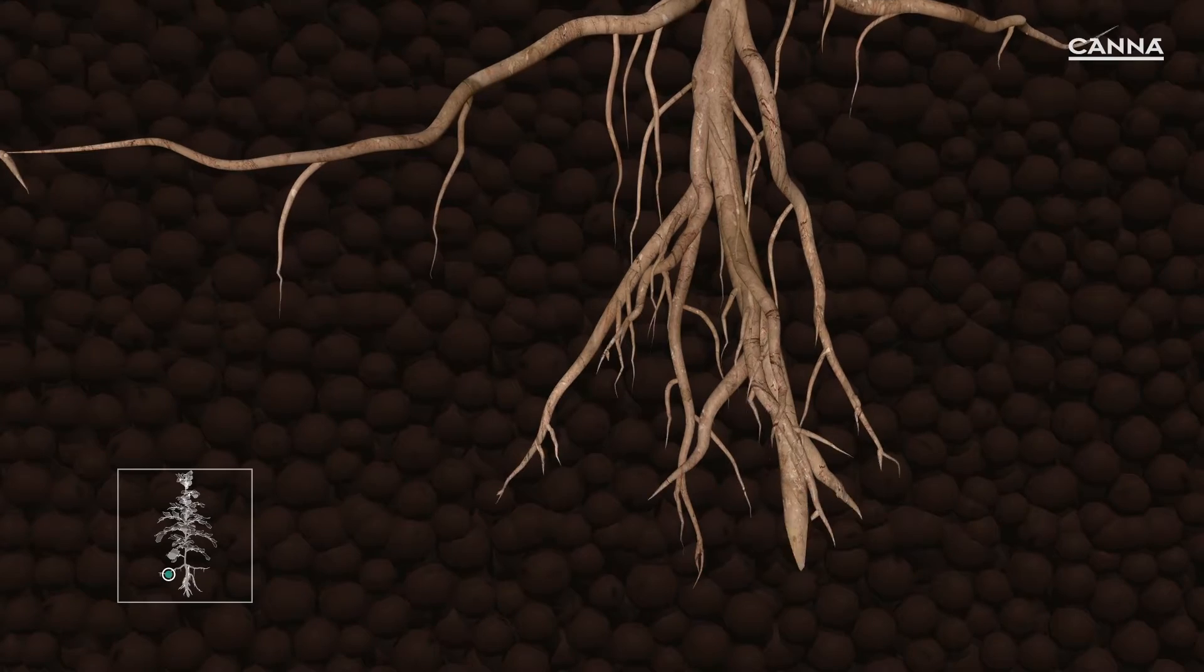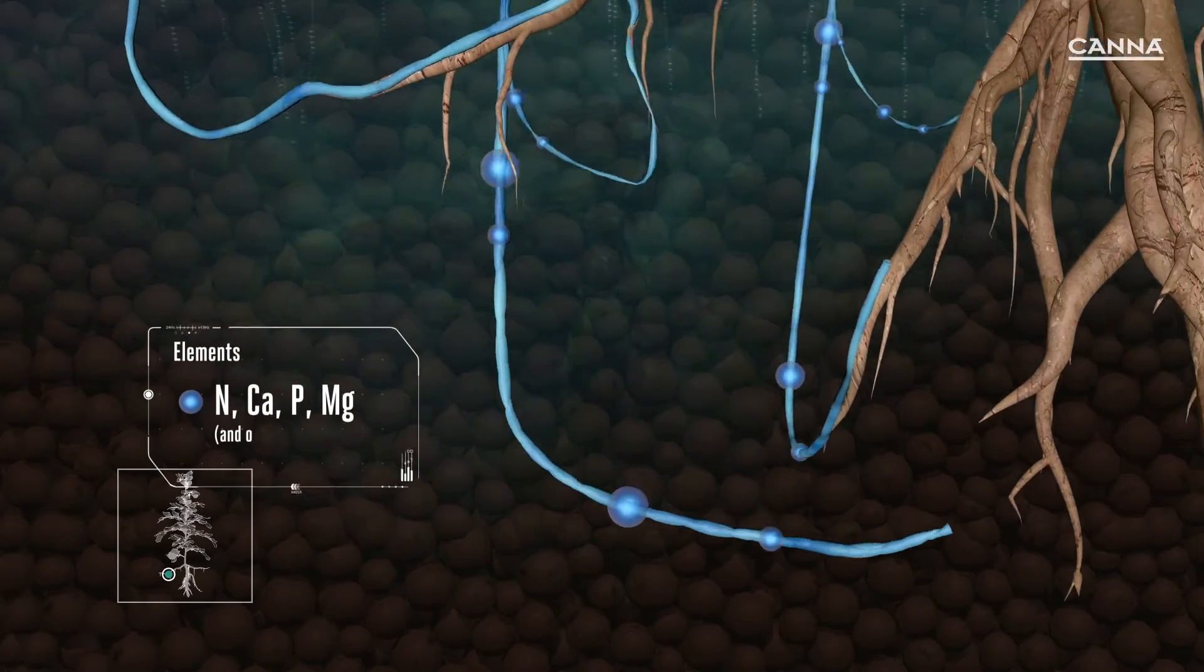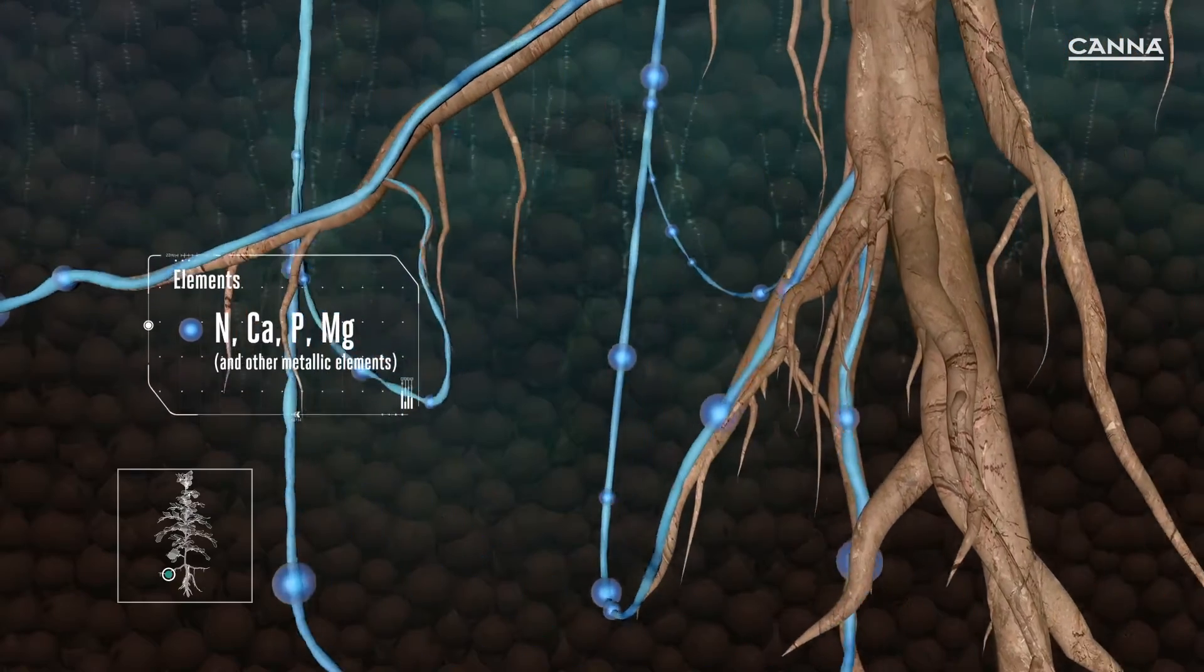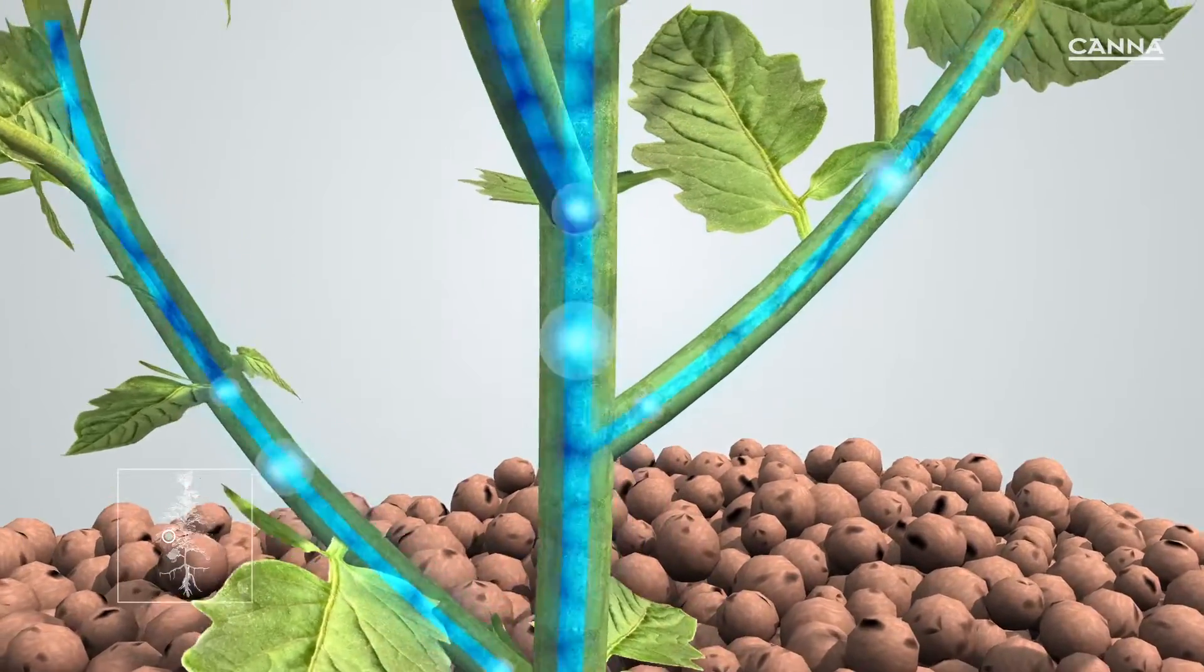More and more roots and branches appear. Together, they form the root system. The elements are also sent up from the roots to the plant's growth buds. These buds will turn into new stalks with leaves.